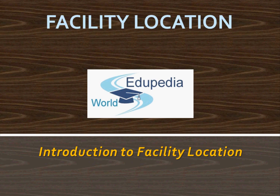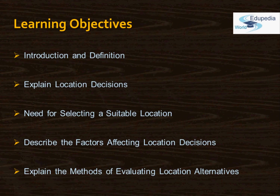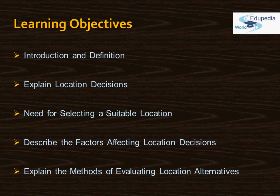This emphasizes the importance of facility location. Today we shall be beginning a new series of lectures on the importance of facility location. In the introduction today, we will see the basics — the definition and introduction of facility location — and explain the various location decisions and their importance. Thereafter, we will see what is the need for selecting a suitable location, the various factors affecting location decisions, and finally the methods of evaluating location alternatives. We shall see the details of these methods in our subsequent videos; today we'll just have an introduction of the topic.